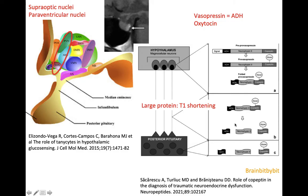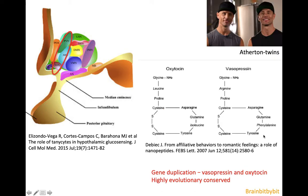The large protein splices before being released into ADH and other proteins. The other hormone released by the posterior pituitary has a very similar molecular structure to antidiuretic hormone — that's oxytocin.